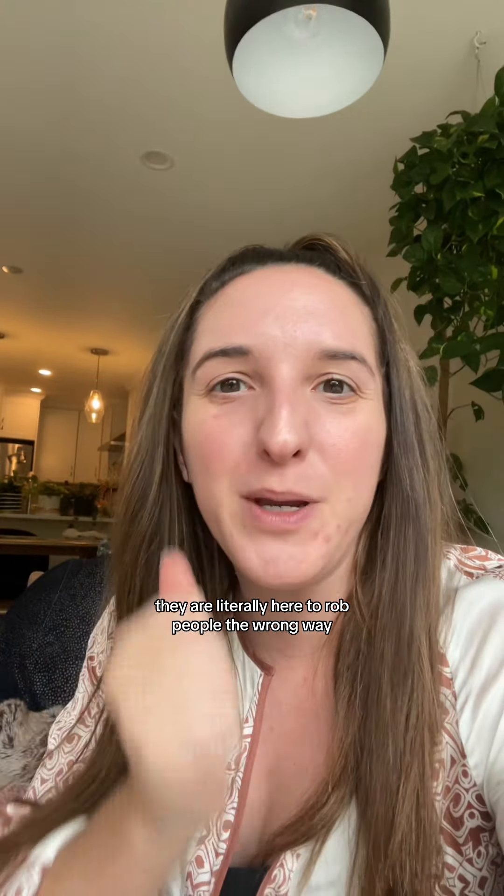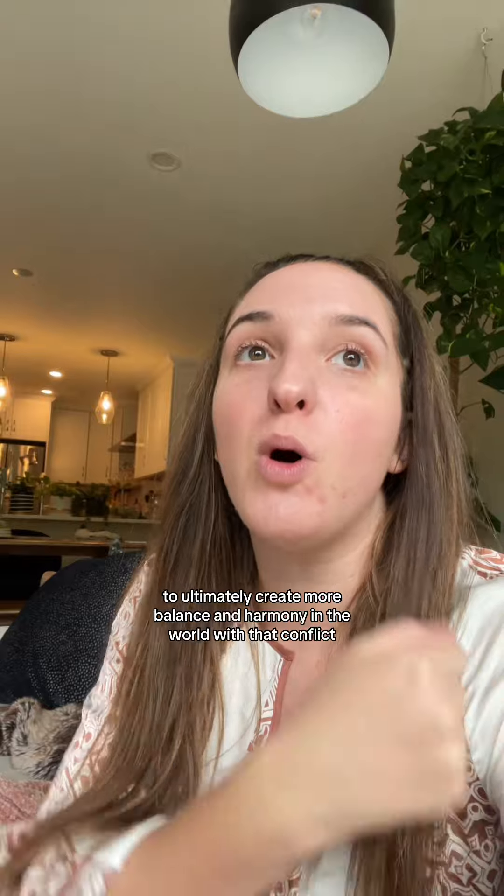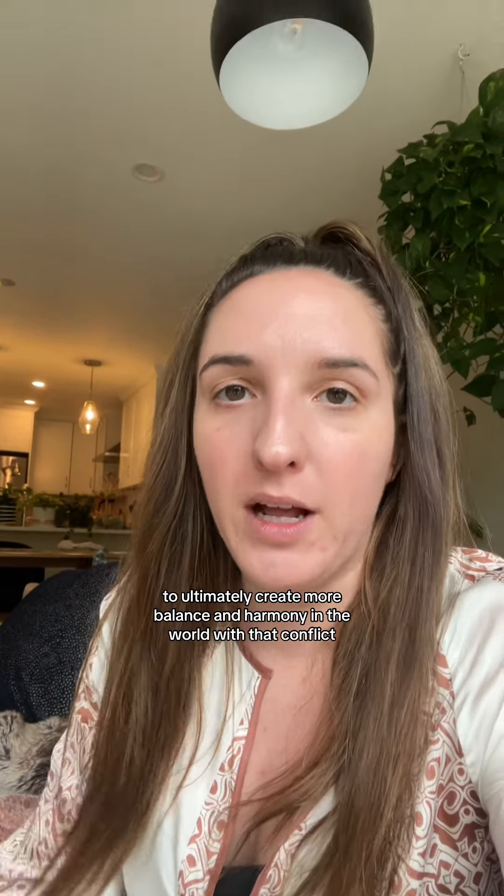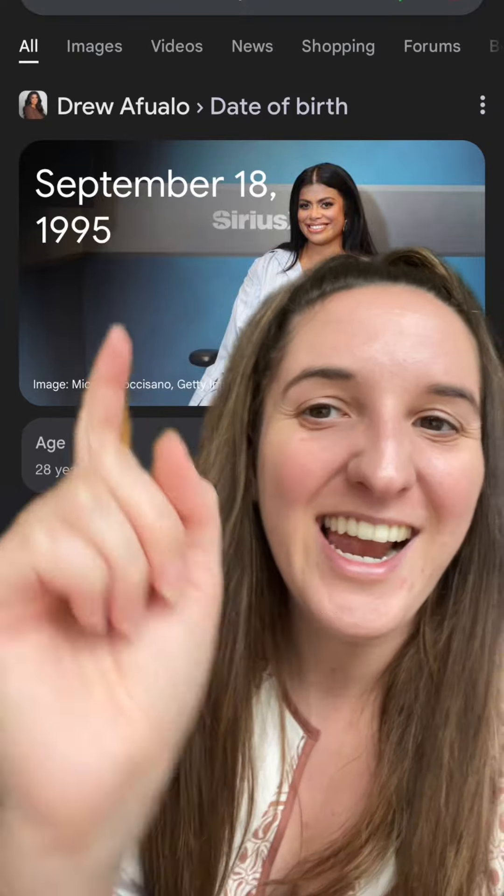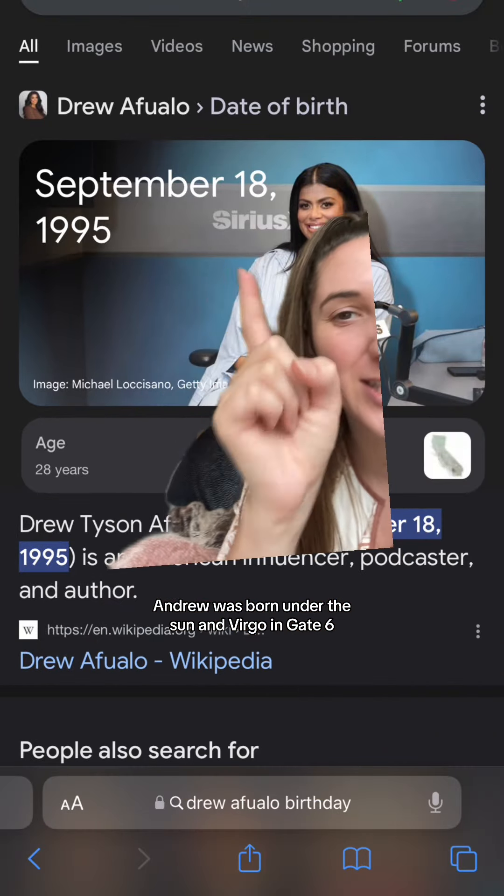They are literally here to rub people the wrong way to ultimately create more balance and harmony in the world with that conflict. So sure enough, I did a little Google and Drew was born under the sun in Virgo in Gate 6.